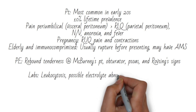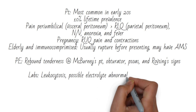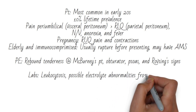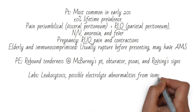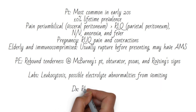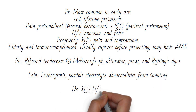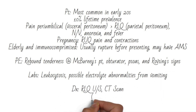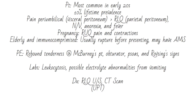Diagnosis can be made with a right lower quadrant ultrasound or abdominal CT. Make sure a urine pregnancy test is done to rule out pregnancy before radiating a fetus with a CT scan — so it doesn't mutate into a superhero.